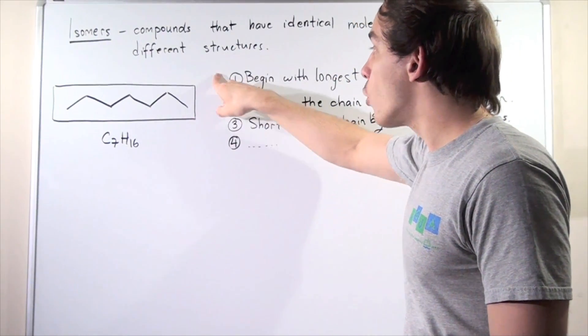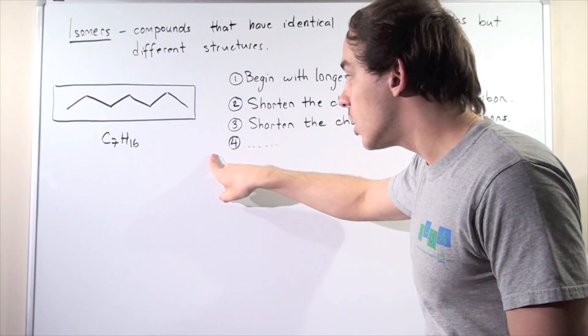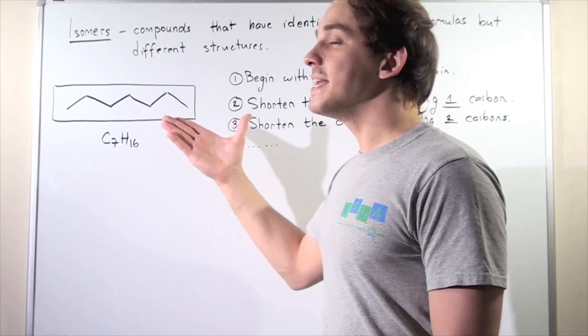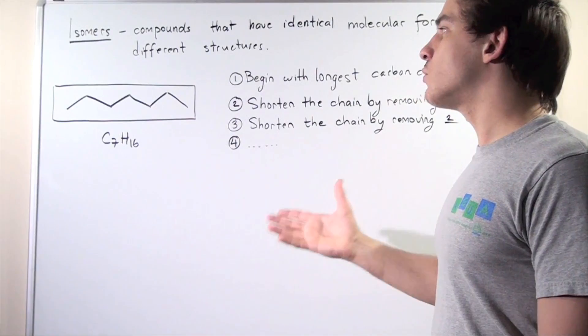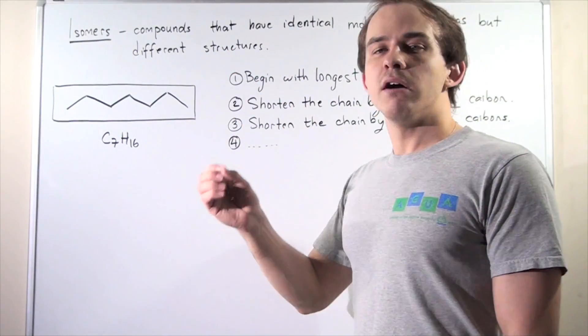Here we have a set of four steps that we're going to follow to find our isomers. And in fact, we can always use these same steps whenever we're trying to find isomers of alkanes.